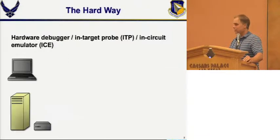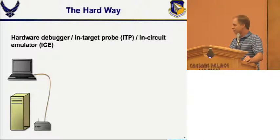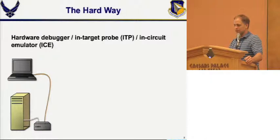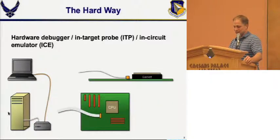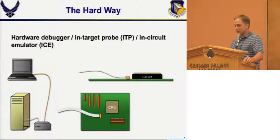To use an in-circuit emulator, you need two systems — it's a little like a WinDbg remote setup. You need a target and a controller; the ICE gets plugged into both. The controller runs the debugging software, in our case something called Source Point. You have to plug the ICE into the motherboard. If you're lucky, the motherboard has a JTAG port, but that's not very common on commercial PCs.